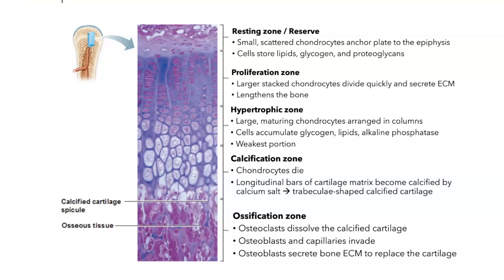Now let's take a closer look at the four layers of cartilage in the epiphyseal plate used in interstitial bone growth — the growth of long bones in length. This is a cross-section of an epiphyseal plate in a bone. You can see it taken right there, with this lighter region in between the two regions of spongy bone being the hyaline cartilage that makes up the epiphyseal plate. This is taken from a young person whose epiphyseal plates have not closed yet, so we still see the cartilage rather than compact bone.